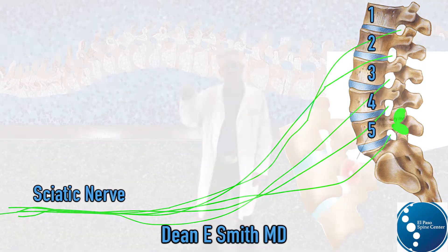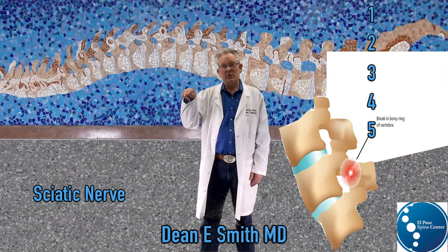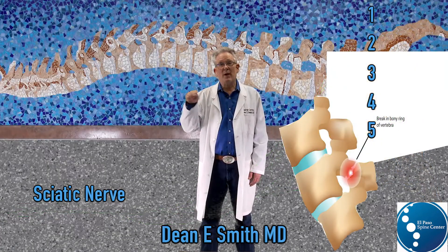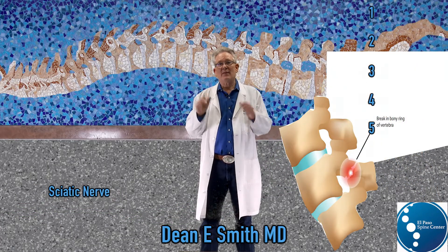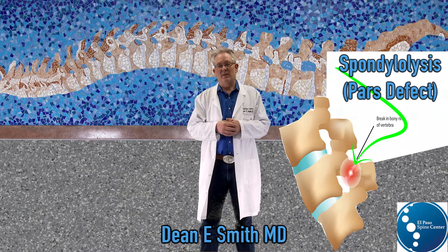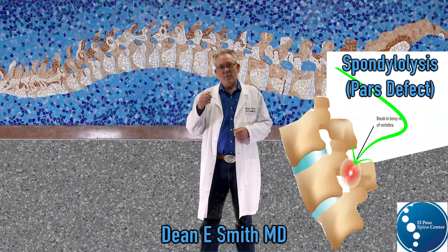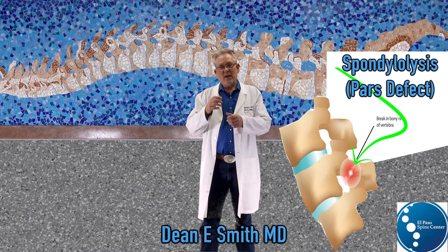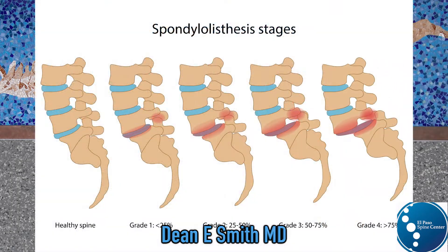If the two processes going down break, that's called a PARS defect. With a PARS defect, that can allow one bone to slip on the other bone. That is called a spondylolisthesis.